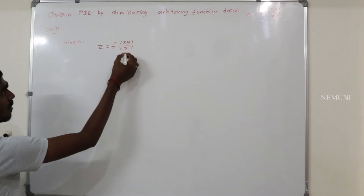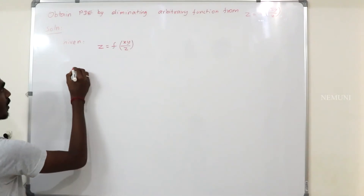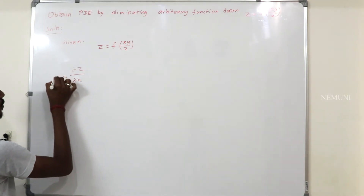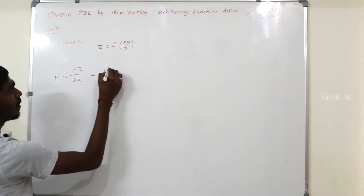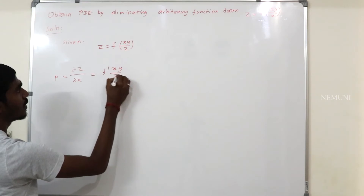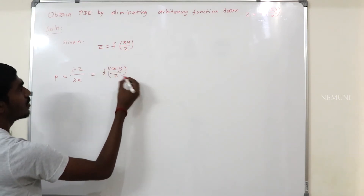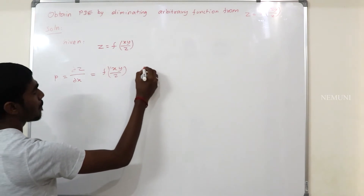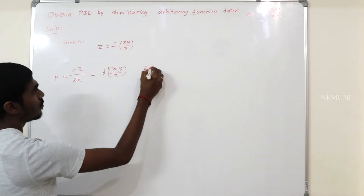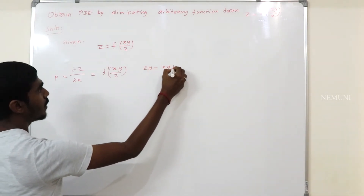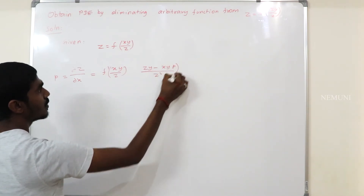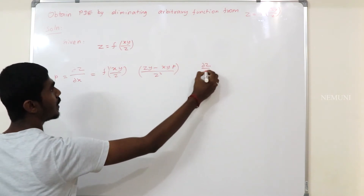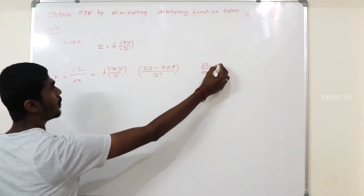First we use the u by v format and partially differentiate with respect to x, which is equal to p. We get f dash of x·y by z, and then partially differentiating with respect to x we get z·y minus x·y·p divided by z squared. This p is coming from dou z by dou x equal to p.